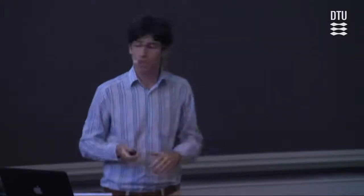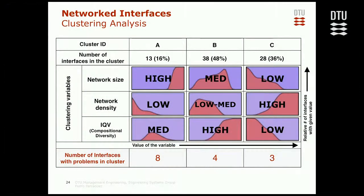The question is: so what? Does it affect something? To address that, we need to look at the number of problems per archetype. Cluster A: 13 interfaces, 8 with problems. Cluster B: 38 interfaces, 4 with problems. Cluster C: 28 interfaces, 3 with problems. Intuitively, we know there seems to be a very high proportion of problems in cluster A. I tested this with an ANOVA and it is statistically significant. So this constitution — relatively high size, low density, and medium diversity — seems to be correlated with problems. Perhaps interfaces that are very large and not cohesive are more difficult to manage and therefore more likely to have problems. This is not causal, just correlation, but it's something worth exploring.